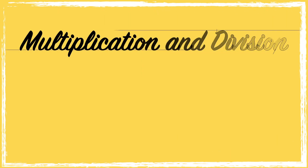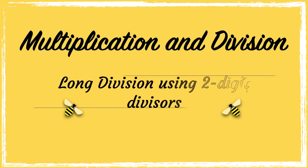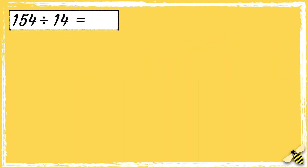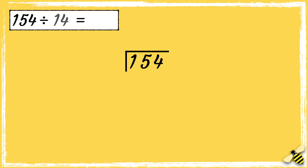In this video we're going to be learning about long division using two-digit divisors. Here is a number sentence: 154 divided by 14. First we need to draw our bus stop. We put the number that we are dividing — the dividend — inside the bus stop. We put the number that we're dividing it by on the outside.